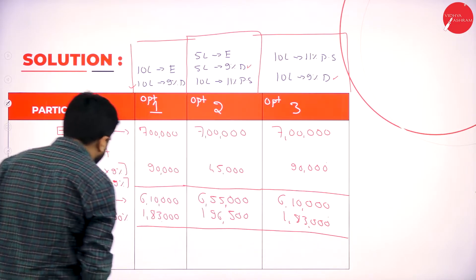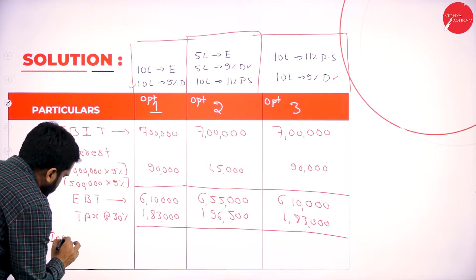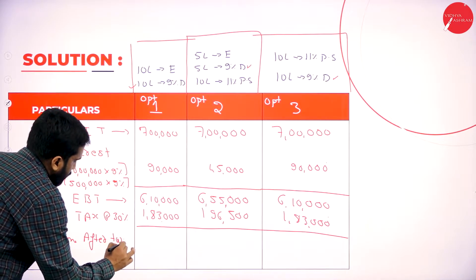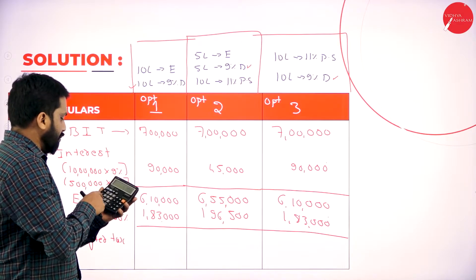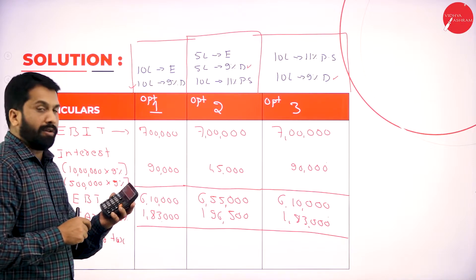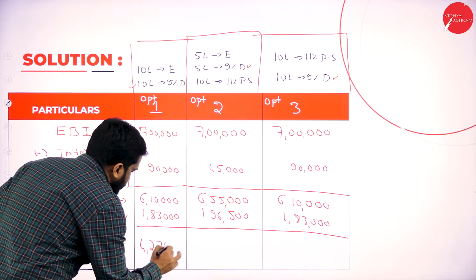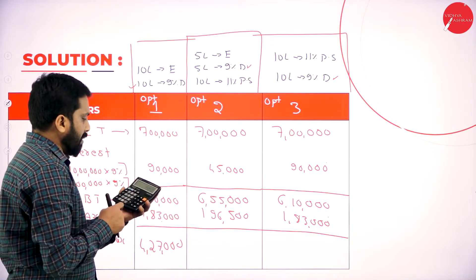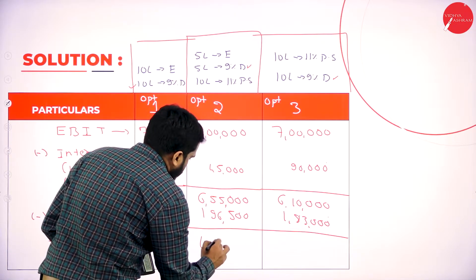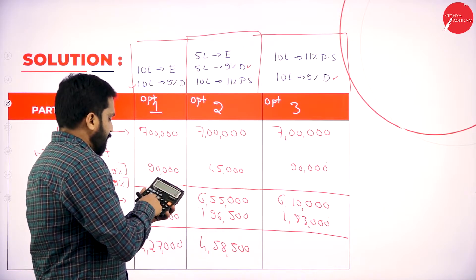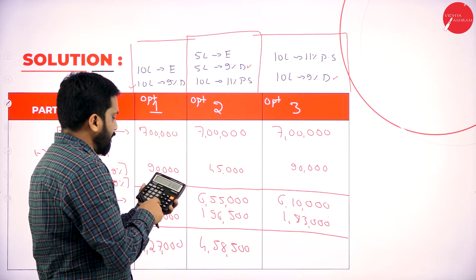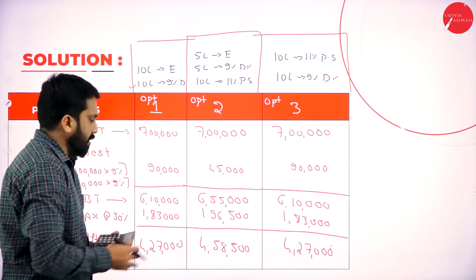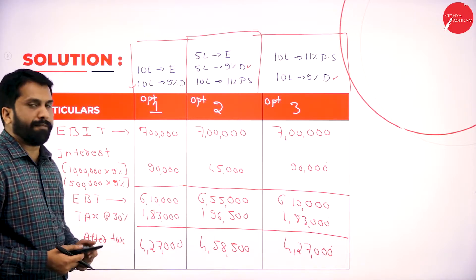So you get profit, income after tax. How much will you get? Option 1: 6 lakh 10,000 minus 1 lakh 83,000 — I got 4 lakh 27,000. Option 2: 6 lakh 55,000 minus 1 lakh 96,500 — I got 4 lakh 58,500. Option 3: 6 lakh 10,000 minus 1 lakh 83,000 — I got 4 lakh 27,000. So the values are 4,27,000; 4,58,500; and 4,27,000.